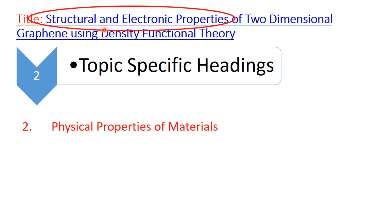Another topic-specific heading covers structural and electronic properties, which are physical properties of materials. Physical properties can also include magnetic, optical, etc. In short, topic-specific headings can be retrieved directly from the title of your synopsis or research proposal.